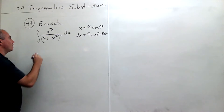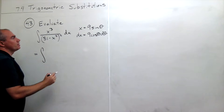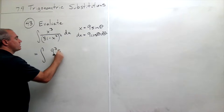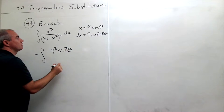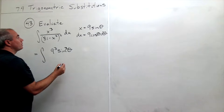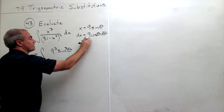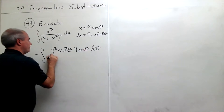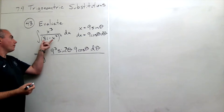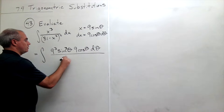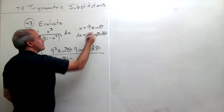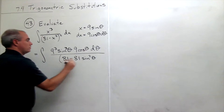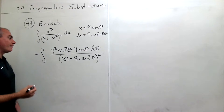Now we're ready to make the substitution. We get the integral of x cubed, which becomes 9 cubed times sine cubed theta, times dx which is 9 cosine theta d theta, all on top. The bottom is 81 minus x squared — since x is 9 sine theta, that's 81 minus 81 sine squared theta, all squared.